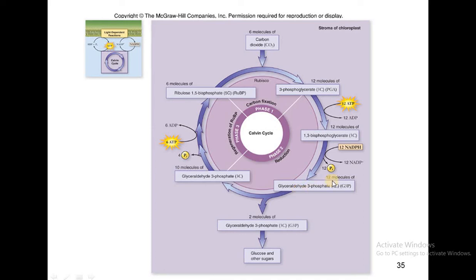Next, 2 molecules of glyceraldehyde 3-phosphate leave the cycle to produce glucose and other sugars. The remaining 10 molecules of glyceraldehyde 3-phosphate are utilized to synthesize 6 molecules of ribulose 1,5-bisphosphate, and here 6 molecules of ATP are also utilized.